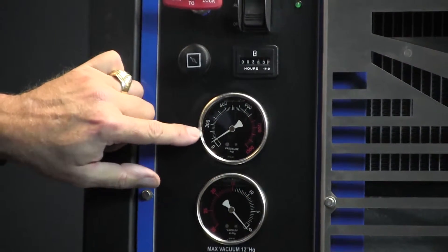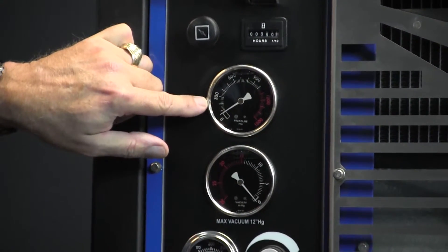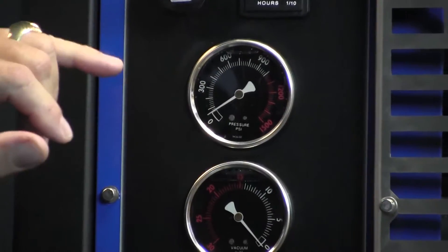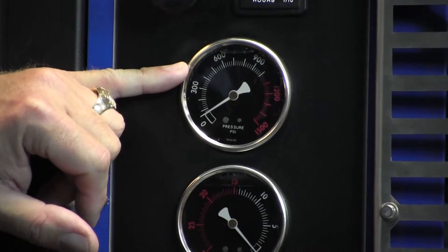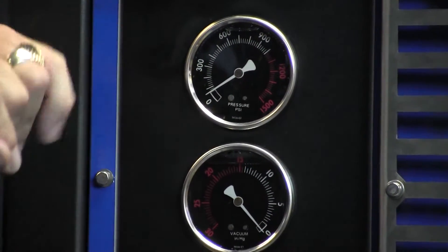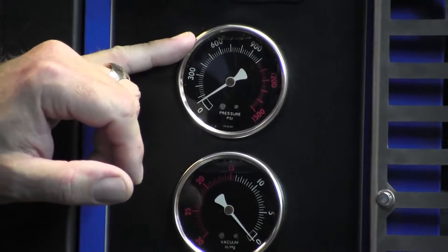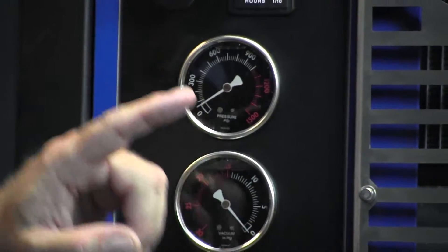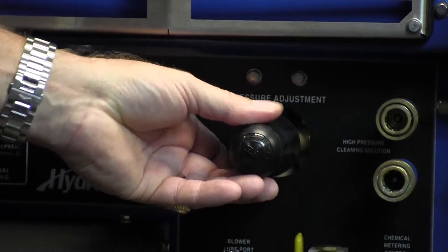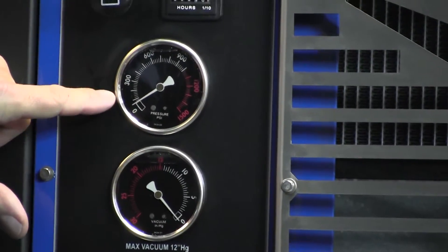The next item is our pressure gauge. This can be dialed in depending on what you're doing, whether it's carpet, hard surface, or fabrics where you want to dial the pressure down. We're going to use this knob down here, which will dictate what our pressure reads up on this gauge. We'll get to that in a minute.